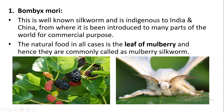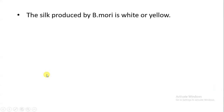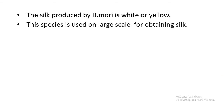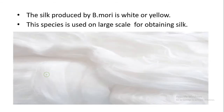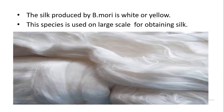Bombyx mori feeds on the leaves of the mulberry plant, which is why it is also called the mulberry silkworm. The silk produced by Bombyx mori is white or yellow in color, and this species is highly useful for obtaining good quality silk on a large scale.